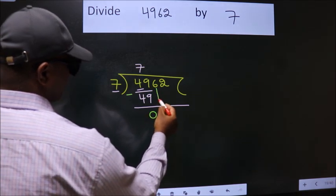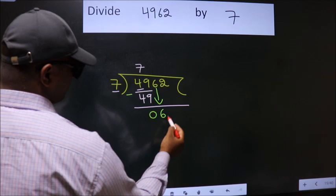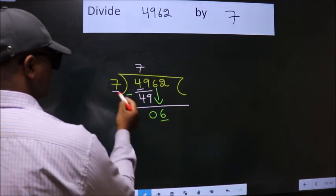After this, bring down the beside number. So 6 down. Here we have 6. Here 7.